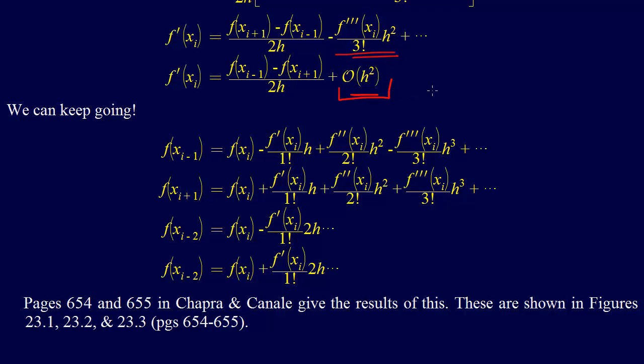As we saw, the error for the forward difference method and the backwards difference method was order h. The error for the center difference method was order h squared. That's what we see here, but we can keep going.